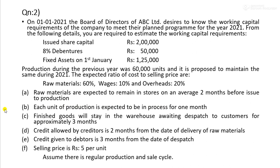Work-in-progress consists of raw materials, wages, and overheads. For work-in-progress, raw materials are considered 100% complete, while wages and overheads are considered 50% complete as the goods are semi-finished.